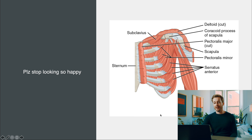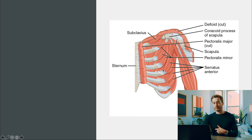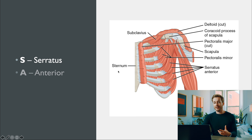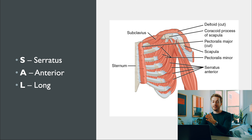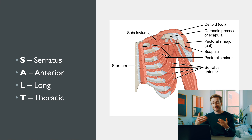Another anatomy mnemonic: SALT — serratus anterior, long thoracic nerve. The serratus anterior muscle at the front of the ribs is innervated by the long thoracic nerve.